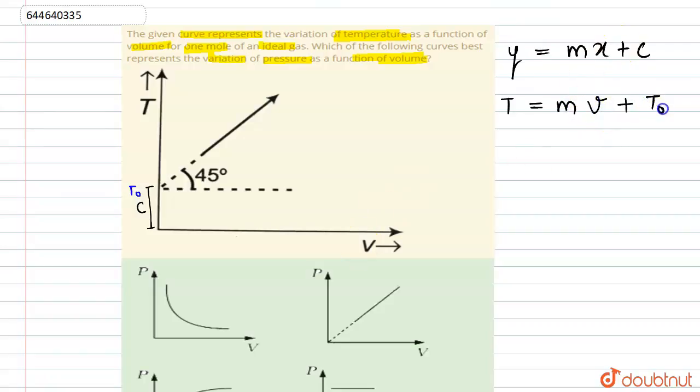Plus T₀, right. Now m is the slope which equals m equals tan 45° in this case, which equals 1. So from this we can write the equation as T equals V plus T₀, right.